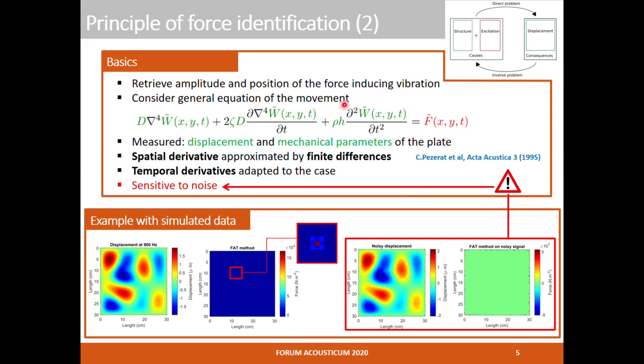The inverse problem is based on the general equation of motion of the plates. Structural parameters such as structural stiffness D, damping factor epsilon, density rho, or geometry — for example H for the thickness — are known, as well as the measured displacements W. The force can be recovered by solving the equation of motion. The spatial derivatives in the space domain are approximated by finite difference schemes. The temporal derivations are adapted according to each case.